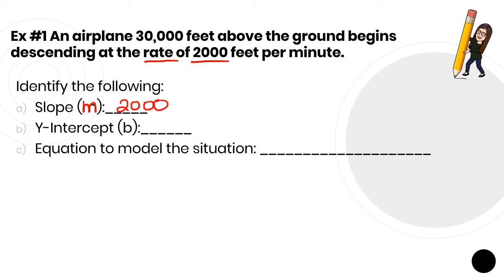Now we have to decide is that a positive 2,000 or negative. Very careful. This word descending implies decreasing, going down. So that's a negative slope. You have to look out for those keywords to make that decision.